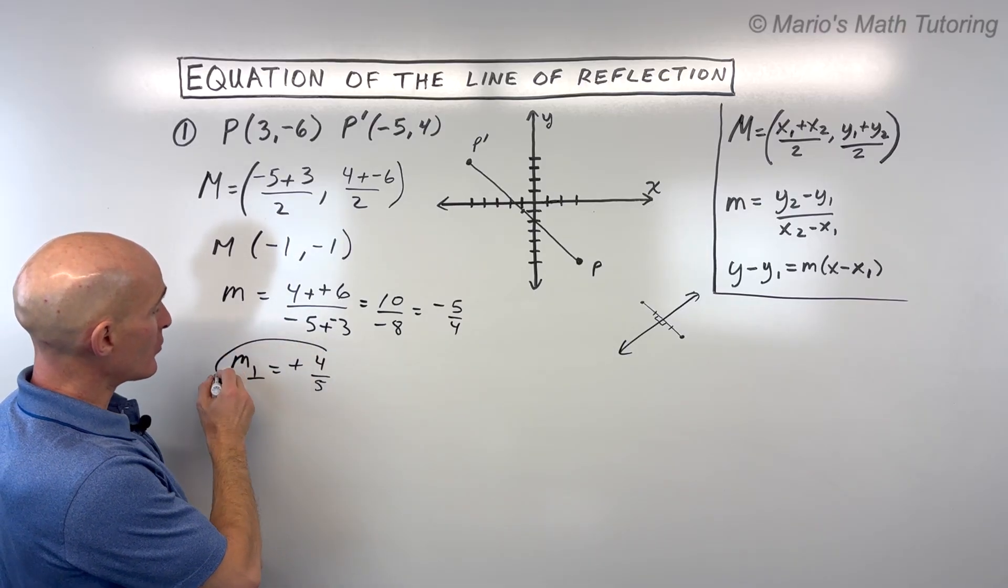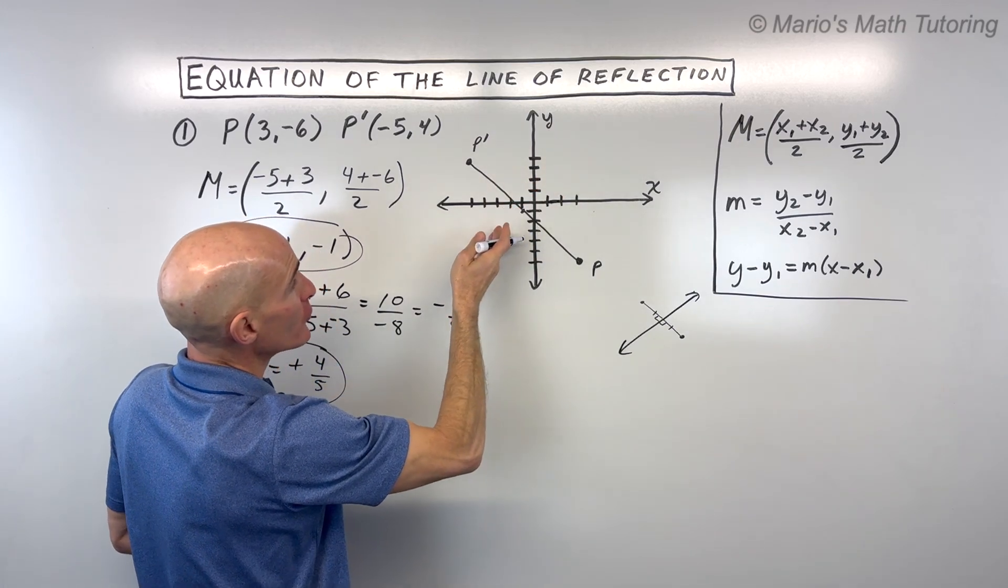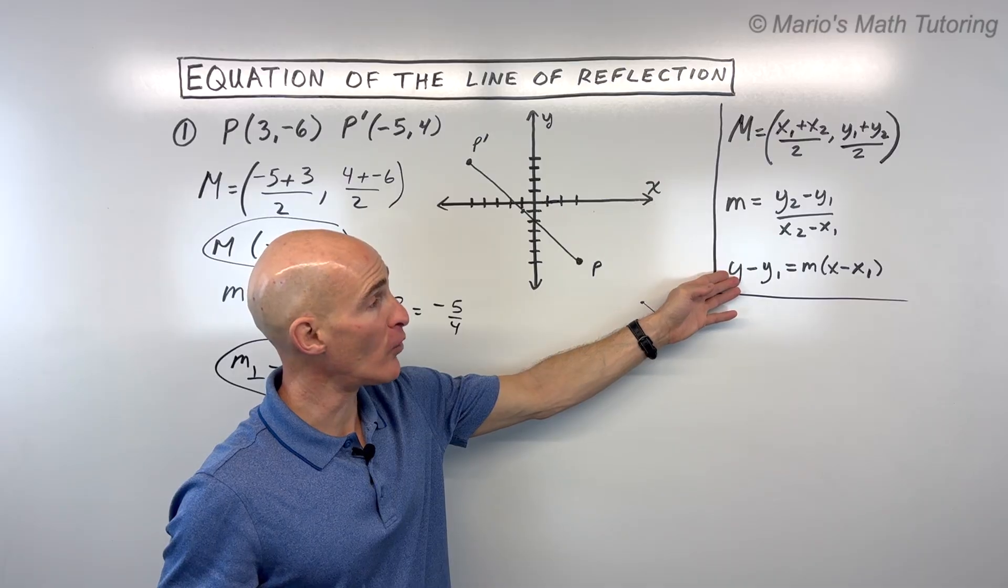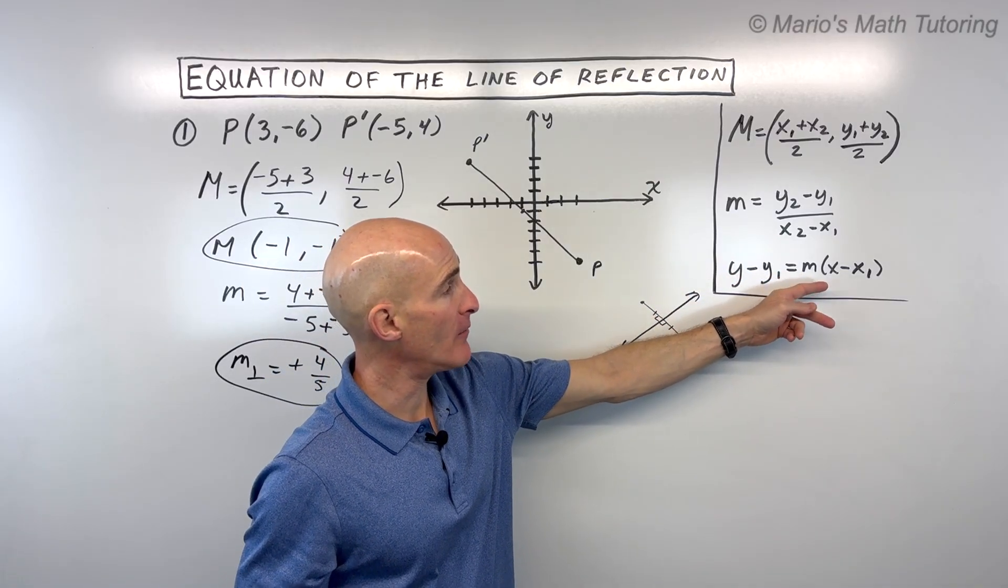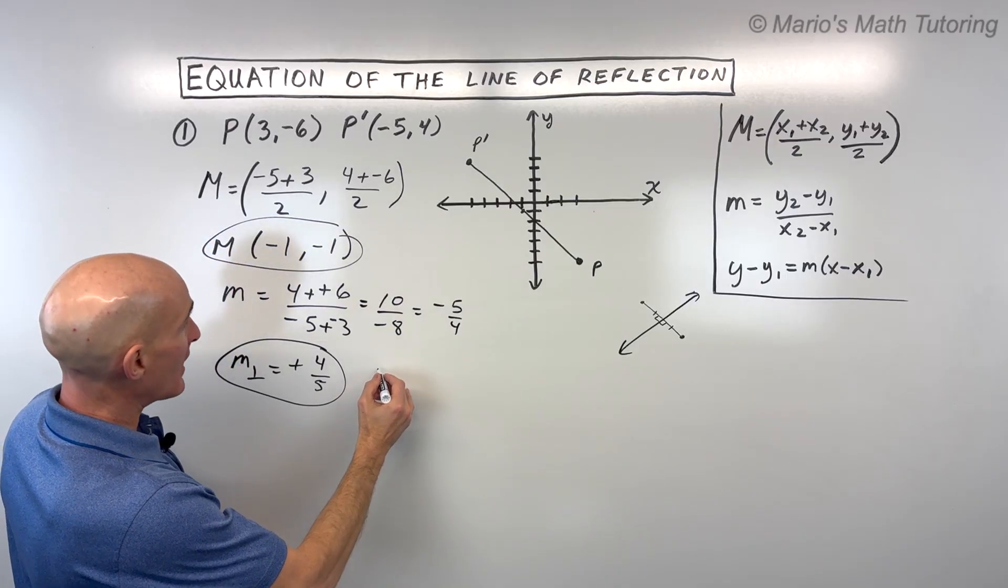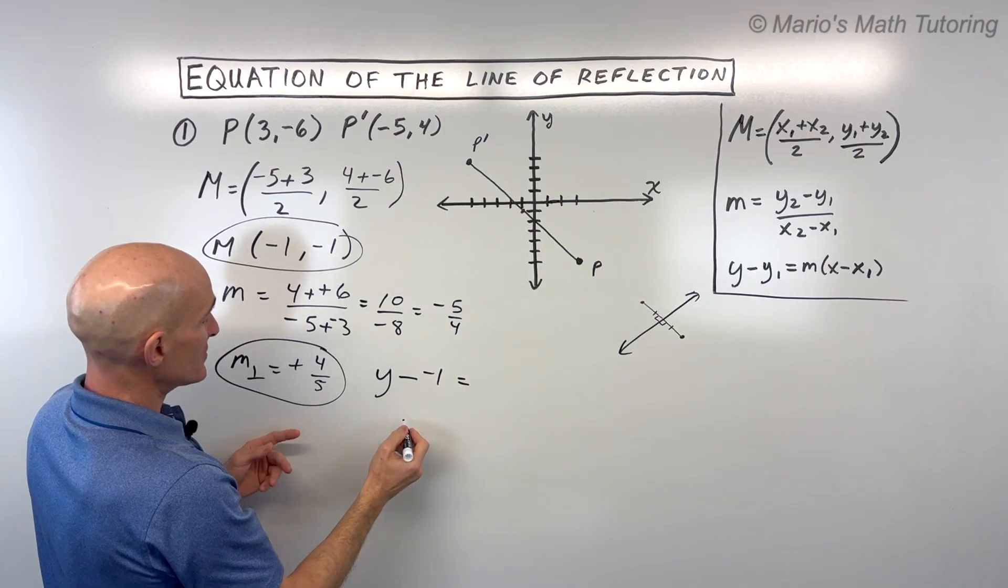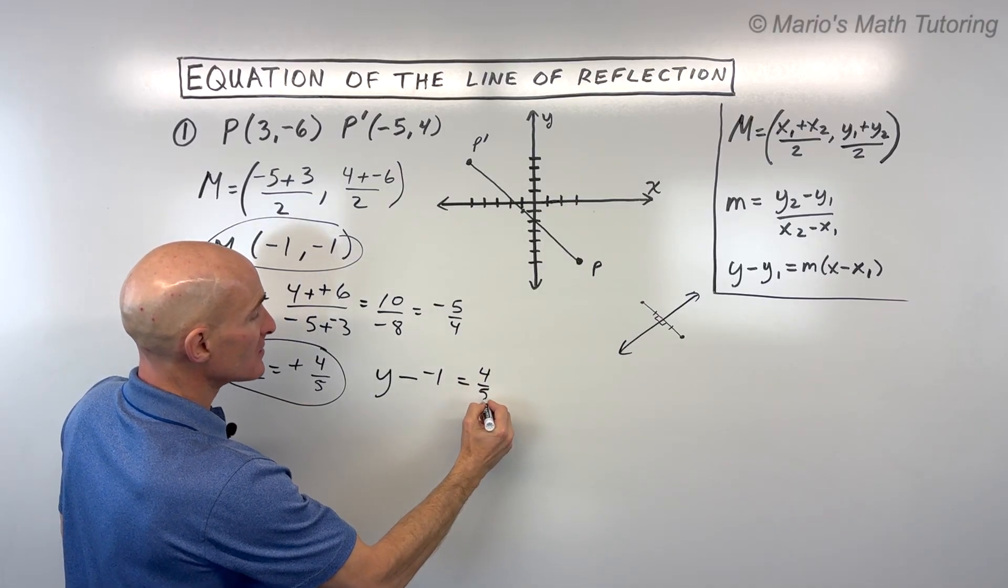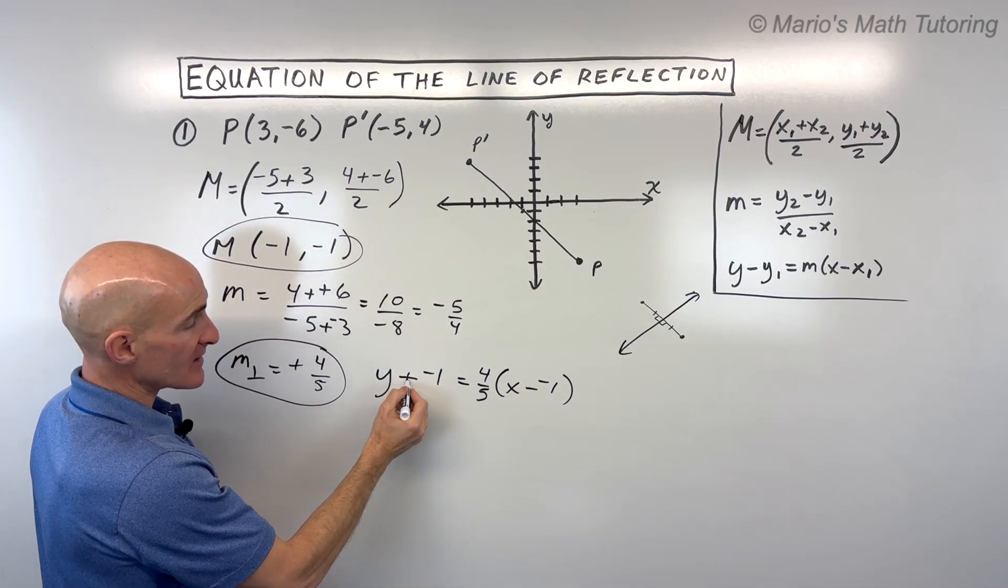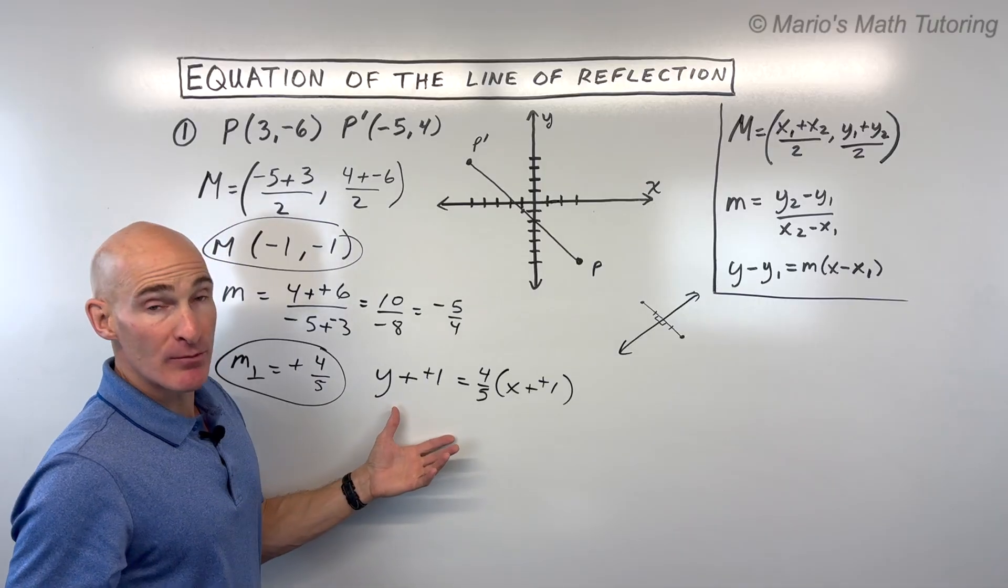So now we have everything we need. We have our perpendicular slope. We have the point that the line is going to go through, which is the midpoint. We can write the equation in the point slope form. Just put in your slope for m, x1 and y1. So let's go ahead and do that. So we have y minus negative 1 equals the slope, which is 4 fifths times x minus negative 1. When you subtract, it's like adding the opposite. This is in point slope form.